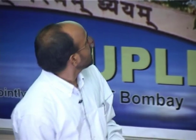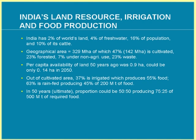Now, a brief discussion on water resource availability in India and projected water requirements for 2050. India has 2% of the world's land area, 4% of fresh water, but 16% of the world's population, and 10% of its cattle. The resource available is much less while our needs are much larger. The geographic area is 329 million hectares, of which 47% is cultivated, approximately 23% forested, 7% under non-agricultural use, and 23% is wasteland. Per capita land availability was 0.9 hectares in 1950, is now about 0.5 hectares, and is predicted to reduce to 0.14 hectares by 2050.